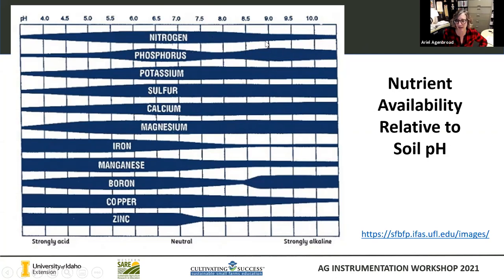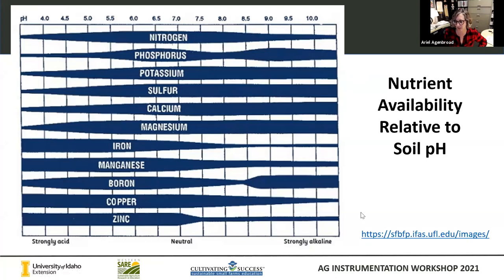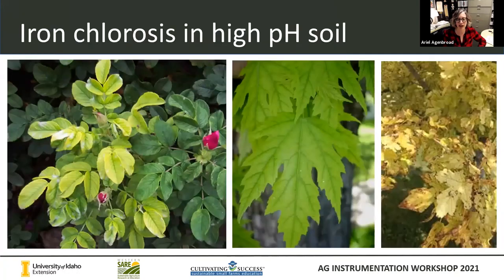Nitrogen becomes less available the more acidic a soil sample becomes as well. Looking at the other side, as we go up into the alkaline or basic category, a lot of these cations are still readily available. This is not going to be a surprise to those of us who live and grow in the arid parts of the state in the Southwest, because we have high pH soils and often excess levels of some of these materials. But when we get into really high pH, we've got all kinds of other problems. One of the most common problems we see in central and southwest Idaho is iron chlorosis.